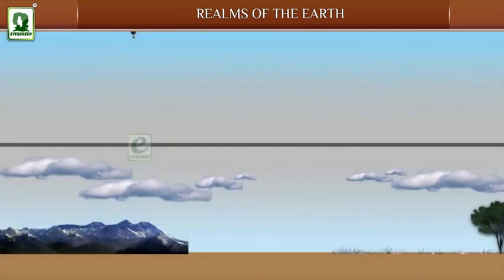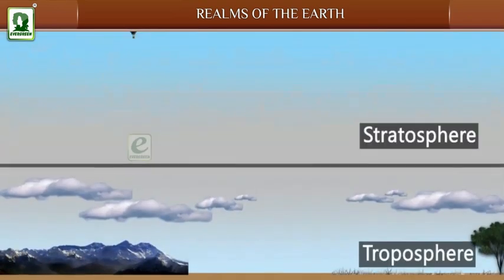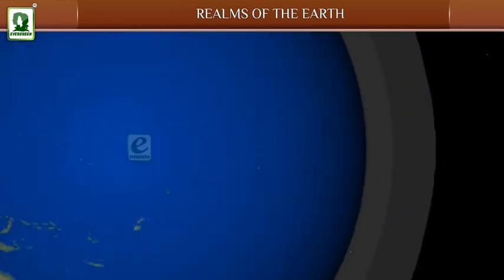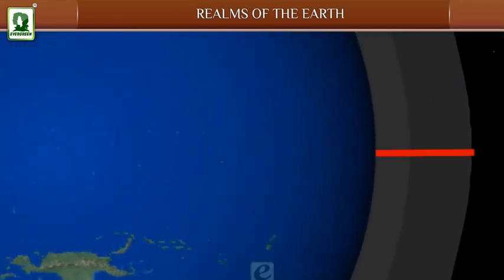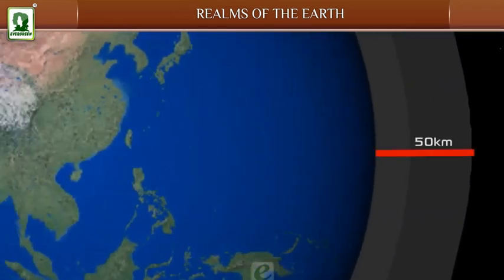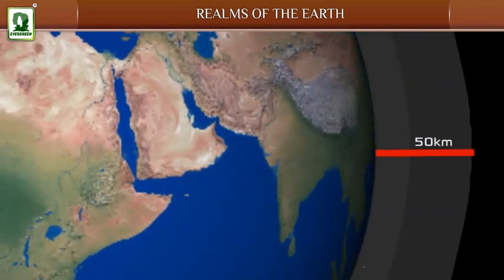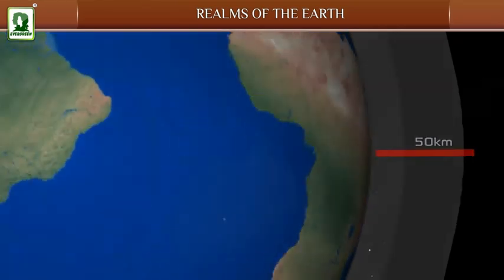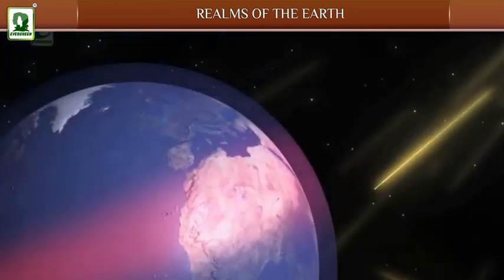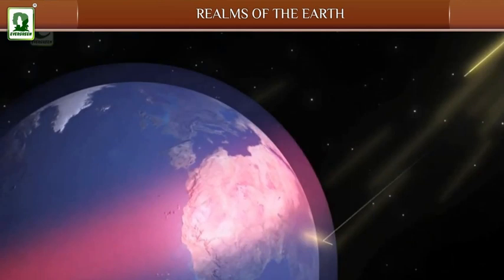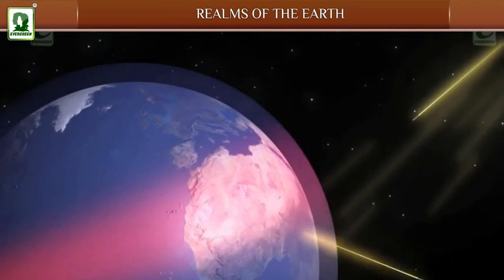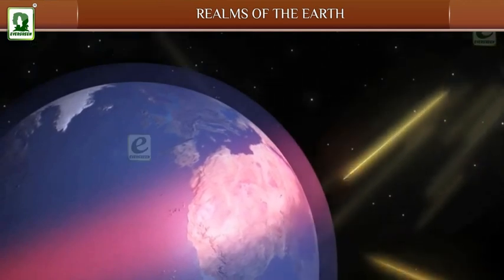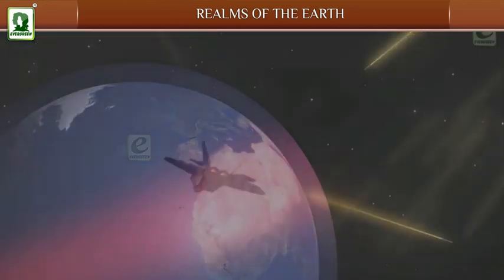Stratosphere: It lies above the troposphere, extending up to a height of 50 kilometers above the surface of the earth. The ozone gas in this layer protects us from the harmful rays of the sun. Many jet aircraft fly in the stratosphere.